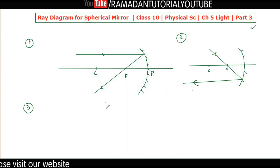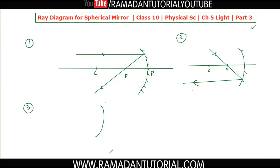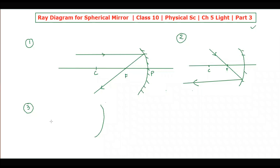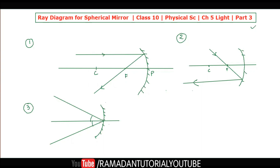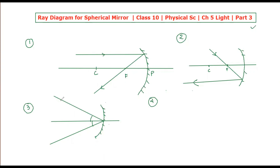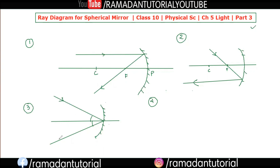If you haven't seen part three before part four, you may be confused. I have drawn the spherical mirror again with the principal axis. The third ray of light is the one that falls straight onto the pole. When a ray of light falls straight to the pole, it reflects such that the angle with the principal axis is the same on both sides — the angles of incidence and reflection are equal.